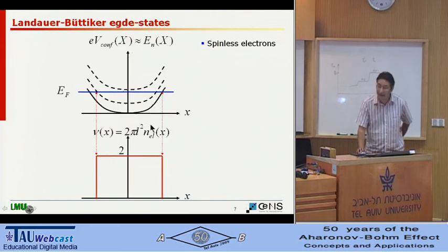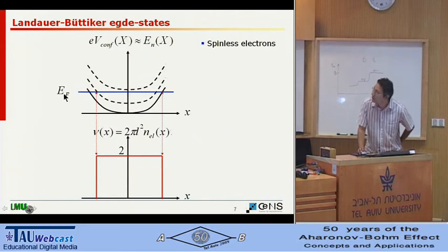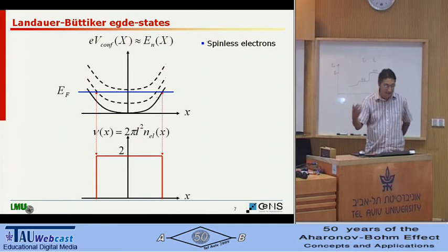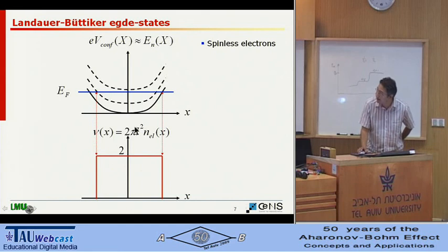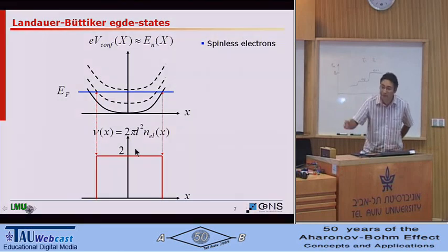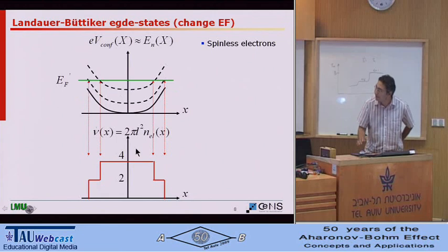Then you come to the Landauer-Büttiker state. You put your Fermi energy here, then the Fermi energy cuts the Landau level here, so that you have a high density of states, therefore you can transfer current from there. And then if you look at the density distribution, this is position versus density, or we can call it filling factor. You see that it's quite funny, because it's zero here, then it's suddenly at filling factor two. So there's something wrong, and we will come back to that.